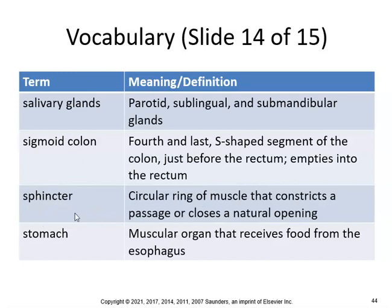Saliva is digestive juice produced by salivary glands and contains the enzyme amylase. The three salivary glands are: parotid, sublingual, and submandibular. Before you even take a bite of food, your salivary glands are working hard to get ready for digestion. The sigmoid colon is the fourth and last S-shaped segment of the colon, just before the rectum. The sphincter is a circular ring of muscle that constricts a passage or closes a natural opening — it takes a while for babies to gain control of the sphincter, which is why they need diapers early on.